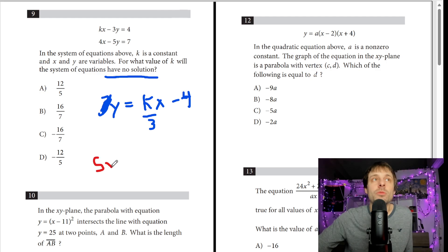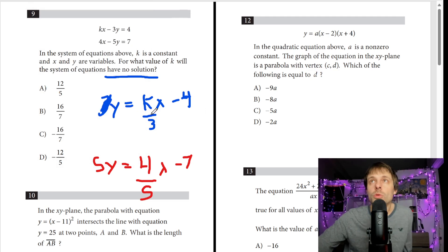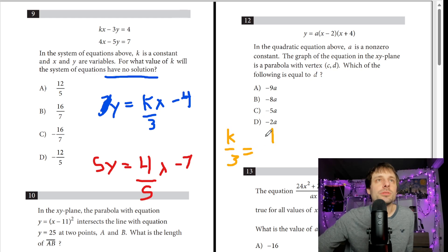Let's get our slope for the other side. Add the 5y to the other side. 5y is equal to 4x minus 7. Divide that by 5. And then now I know that these two are equal. We'll say k over 3 is equal to 4 over 5. 5k is equal to 12. k is equal to 12 over 5.